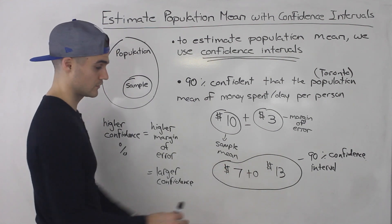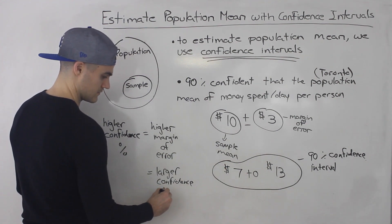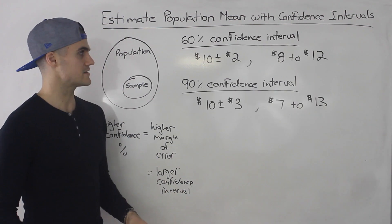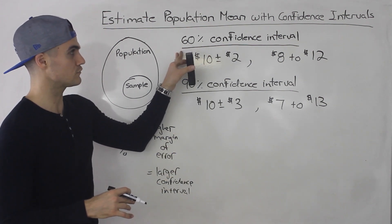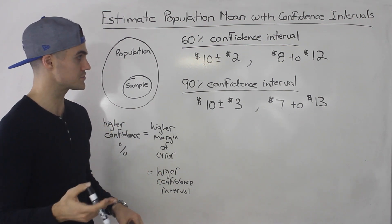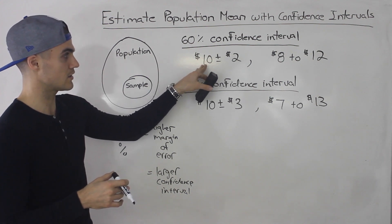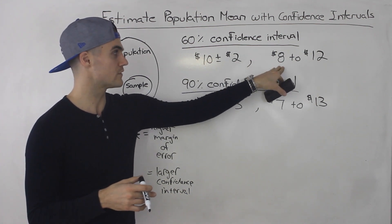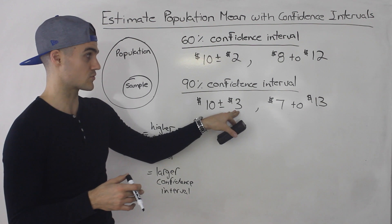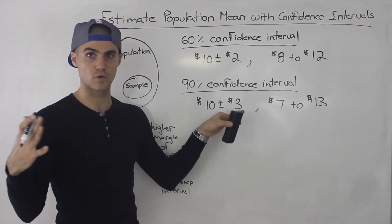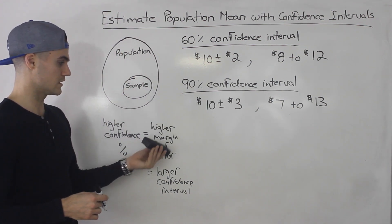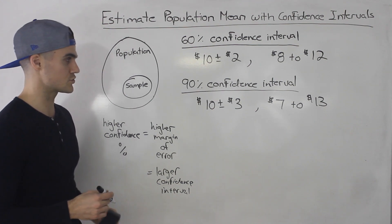Notice we went from 8–12 to 7–13. As a summary: the 60% confidence interval was $10 plus or minus $2, so that was 8 to 12. If we want to be more confident with a 90% confidence interval, it's $10 plus or minus $3, so the margin of error increased and the confidence interval was wider at 7 to 13. Higher confidence percentage means higher margin of error and a larger confidence interval.